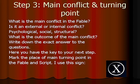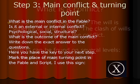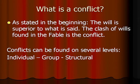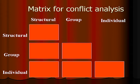To clarify: what is a conflict? The will is superior to what is said, so the clash of wills that you find in the fable is the conflict. Conflicts can be found on several levels: individual, group, and structural. You can use this kind of matrix where you have conflicts from an individual point of view — in conflict with another individual, in conflict with a group, or in conflict with the structure. The structure is what we sometimes call society, but it's a level of organization.